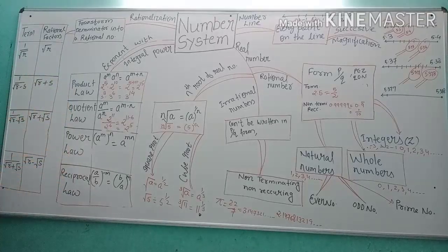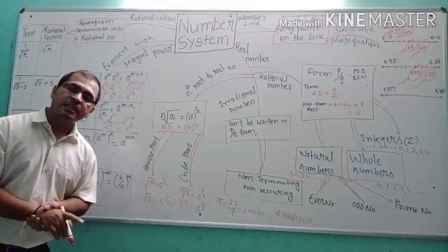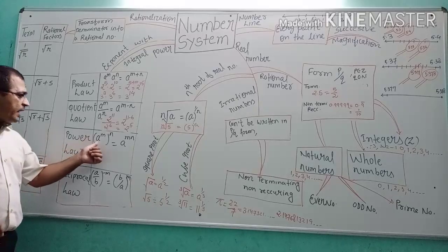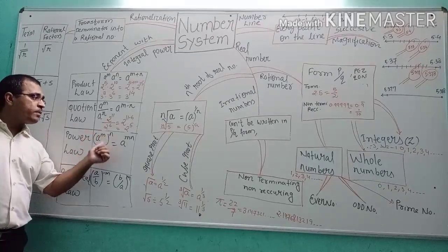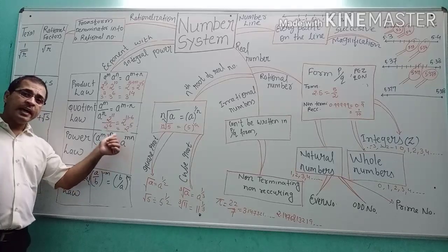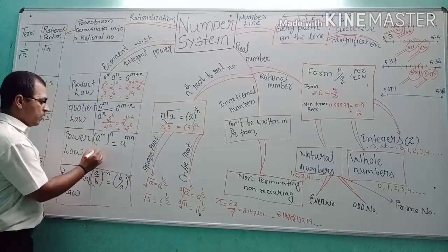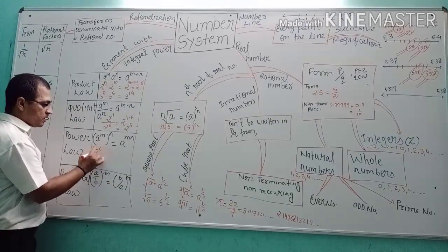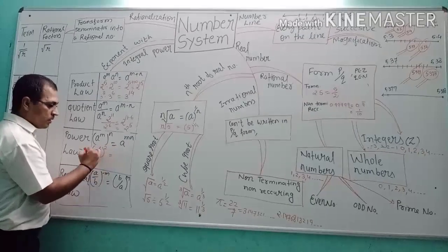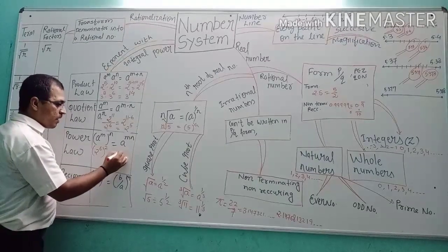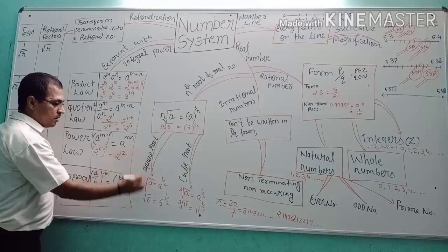The next law is the power law — the real number is a single base but raised to a power twice. Here, (A to the power M) to the power N equals A to the power M times N. For example, (2 to the power 6) to the power 2 equals 2 to the power 12.